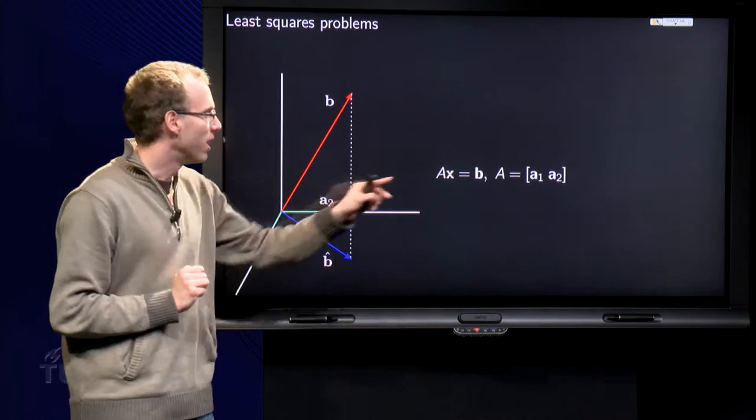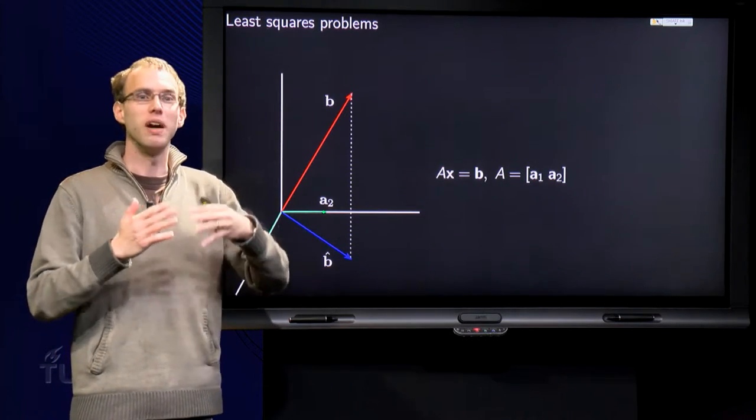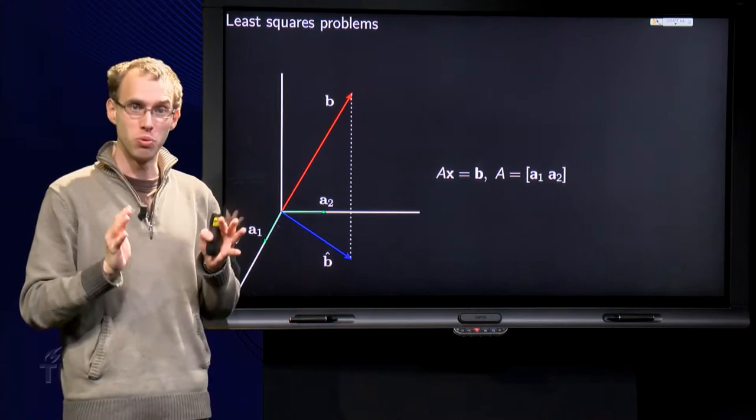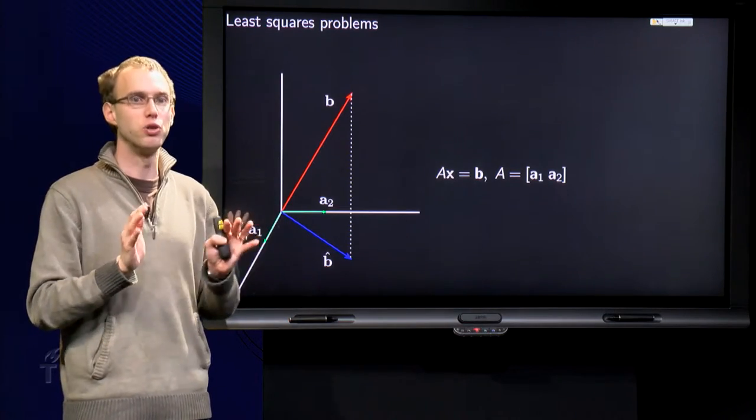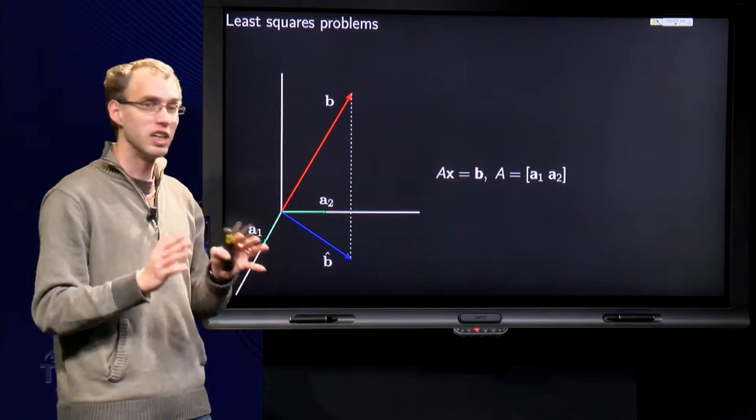Suppose we have a matrix A which has only two columns, just to make the pictures easier to draw. We can easily generalize this to more columns. So we have a system AX = b which is inconsistent.